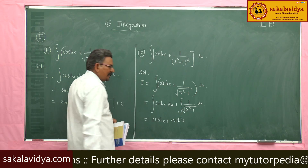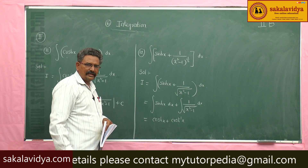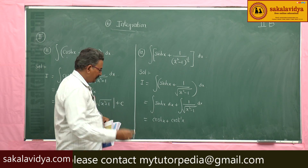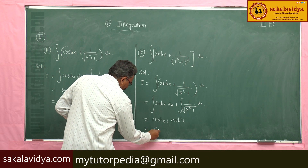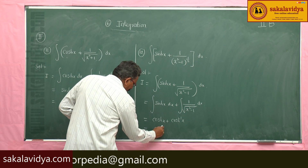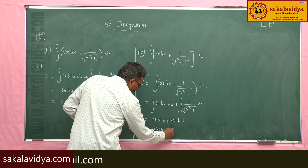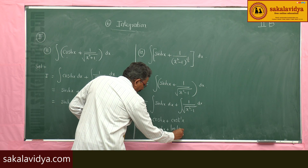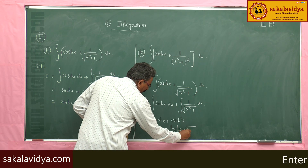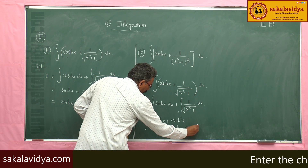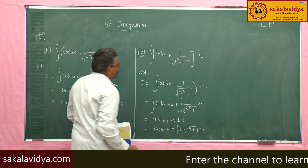The cosh⁻¹ x can be expressed in terms of a log function. So the final answer is cosh x + log|x + √(x² - 1)| + C.